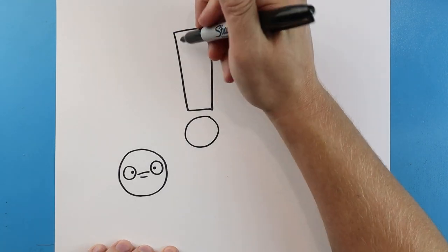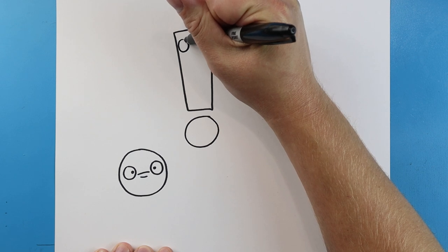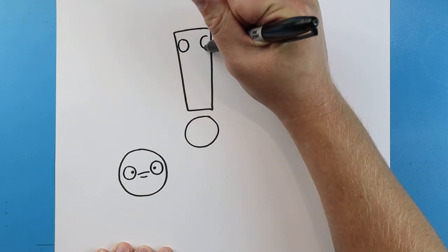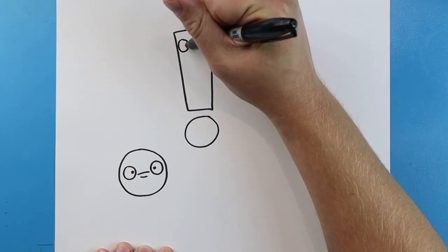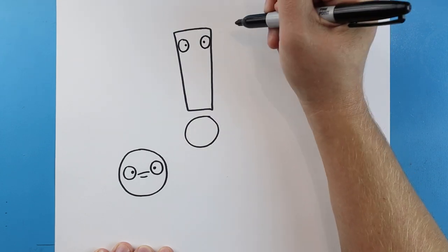And then for this face I'm going to add a circle or oval shape for an eye. Put another one over here. Put two little dots in here.